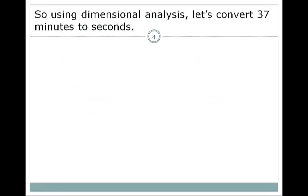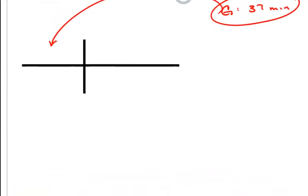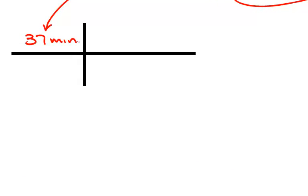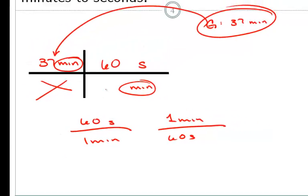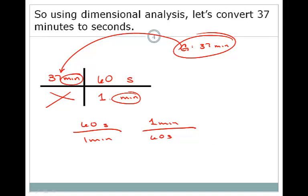Using dimensional analysis, let's convert 37 minutes to seconds. We take our given — 37 minutes — with nothing underneath. Our two conversion factors are 60 seconds per one minute and one minute per 60 seconds. Since we want seconds on top, we need minutes on the bottom, so our conversion factor is 60 seconds over one minute. To solve: 37 times 60 divided by 1 gives us 2,220 seconds. Moving across a line means multiply; moving down a line means divide.